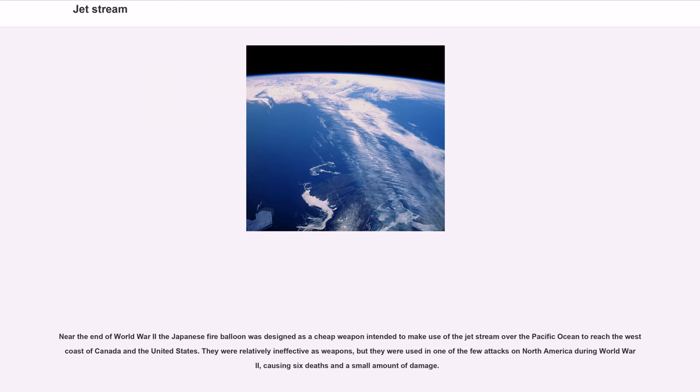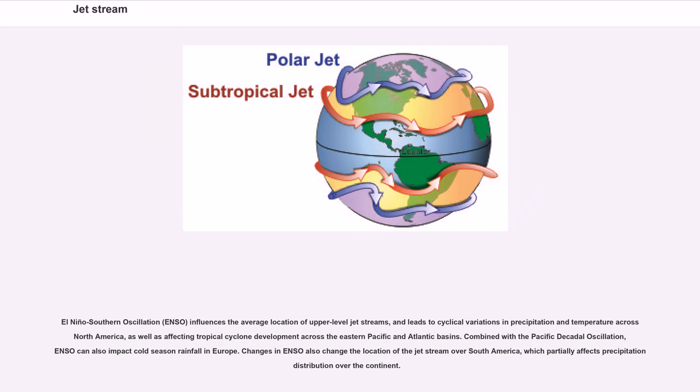Near the end of World War II, the Japanese fire balloon was designed as a cheap weapon intended to make use of the jet stream over the Pacific Ocean to reach the west coast of Canada and the United States. They were relatively ineffective as weapons, but they were used in one of the few attacks on North America during World War II, causing six deaths and a small amount of damage.